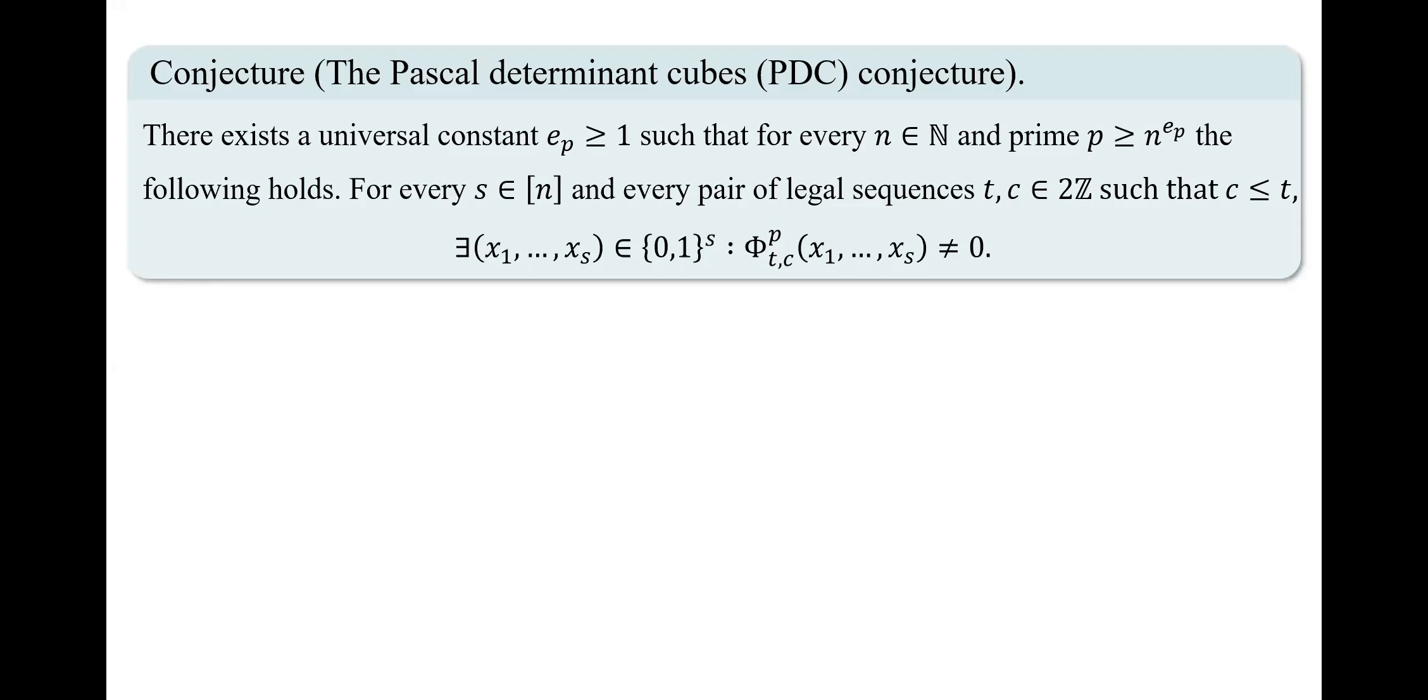Now we put forth the Pascal determinant cubes, or PDC conjecture, which states that there exists a universal constant E_p, such that for every integer n and prime p that is larger than n to the power of E_p, the following holds. For every s and every pair of legal sequences t,c with even entries such that c is smaller or equal to t, there exists boolean values x_1 to x_s, such that F_t_c mod p, when evaluated over x_1 to x_s, is non-zero.